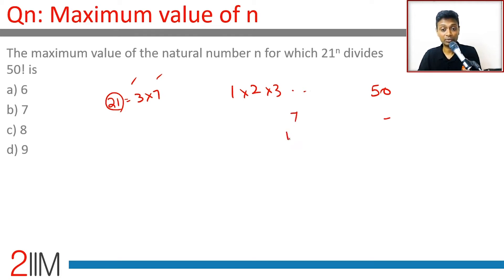7 will give us a 7, 14 will give us a 7, 21, 28, 35, 42, 49. Seven numbers will give us 7.